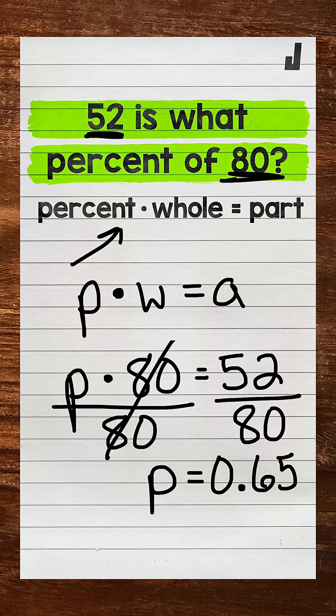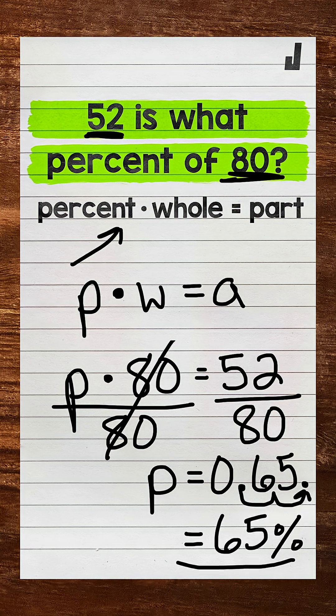So let's convert it to a percent. And we do that by multiplying the decimal by 100. And a quick way to do that is to move the decimal twice to the right. So once, twice, and that gives us 65%. So 52 is 65% of 80.